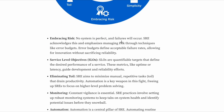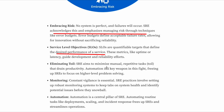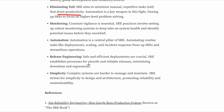Embracing risk: no system is perfect and failures will occur. SRE acknowledges this and emphasizes managing risk through techniques like error budgets. Service Level Objectives are quantifiable targets that define the desired performance of a service. Toil elimination is very important — we must minimize manual repetitive tasks that drain productivity, and automation is the key weapon in this fight. Monitoring means constant vigilance over how the systems are running. Automation is a central pillar — deployment, scaling and incident response can all be automated using code.